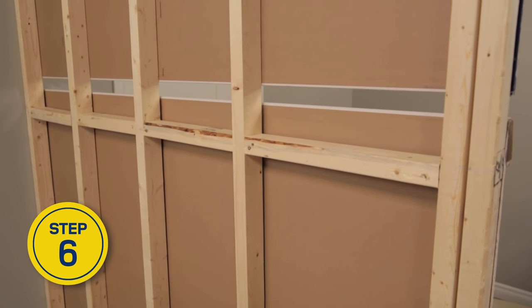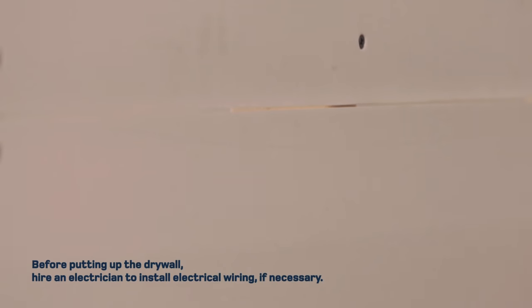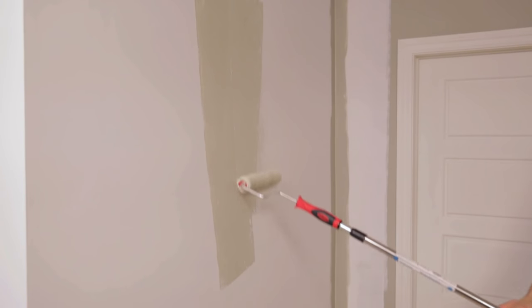Screw the sheets of drywall into the studs or the cross studs. Complete the installation by finishing the drywall joints, installing the baseboards, and painting the new wall. For more advice on your renovation projects,